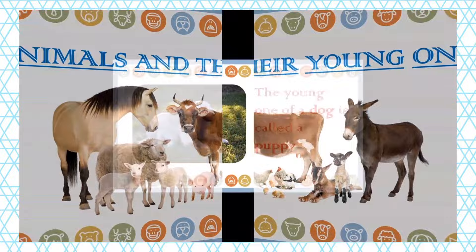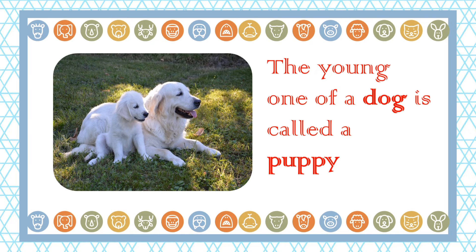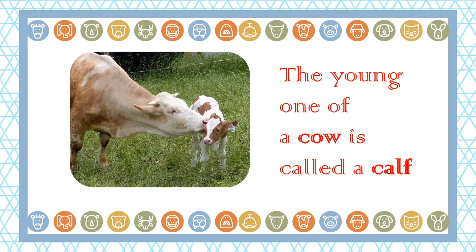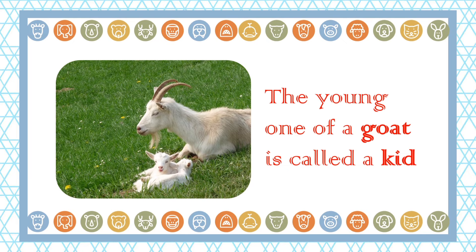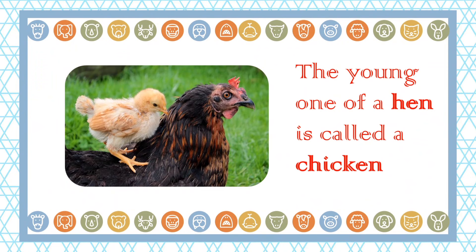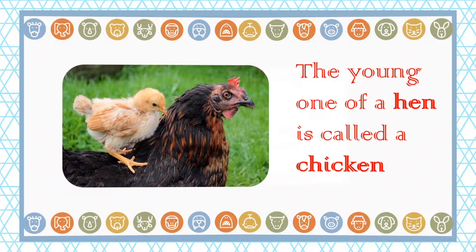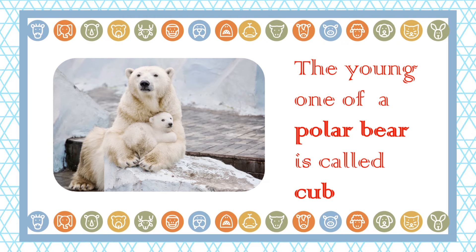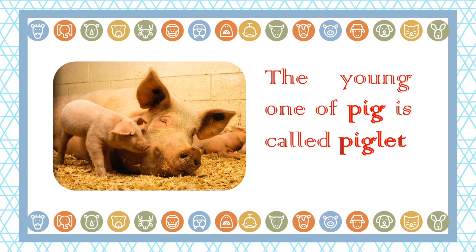Animals and their young ones. Baby dog is called a puppy. Baby cat is called a kitten. Baby cow is called a calf. Baby goat is called a kid. Baby hen is called a chick. Young one of duck is called a duckling. Baby polar bear is called a calf.